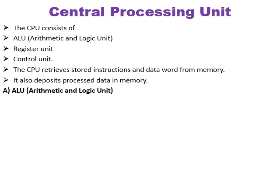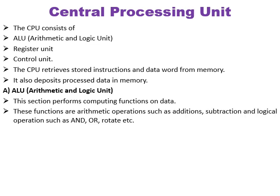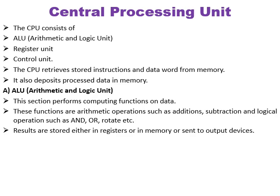Now we will discuss different parts of the CPU. First, the ALU — Arithmetic and Logic Unit. This section performs computing functions on data. These functions include arithmetic operations such as addition and subtraction, and logical operations such as AND, OR, ROTATE, etc. Results are stored either in registers, in memory, or sent to output devices.